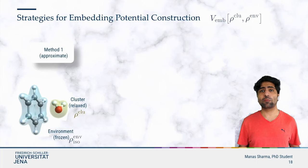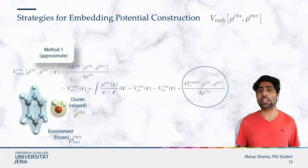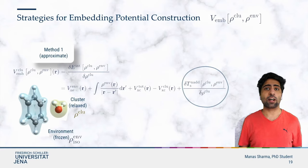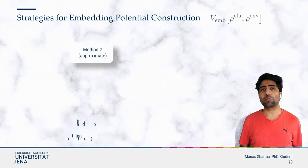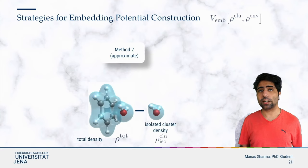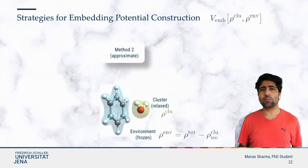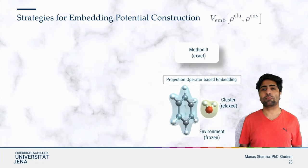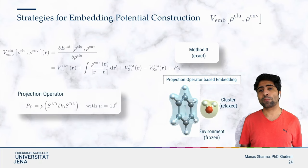This method is approximate in nature due to the presence of kinetic energy density functionals, or KEDFs, in the formula of the embedding potential. Like the exchange-correlation term, the KEDFs are not exactly known. The second method is to determine the density of the total system using a lower-level method, then subtract the isolated cluster density and use the remainder as the environment density. The cluster density can then be relaxed in the presence of this environment density. This method is also approximate due to the presence of KEDFs. Lastly, method 3 is similar to method 1; however, the use of KEDFs is avoided by using a projection operator that orthogonalizes the orbitals of the cluster with respect to the environment orbitals.